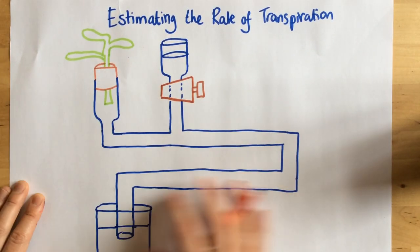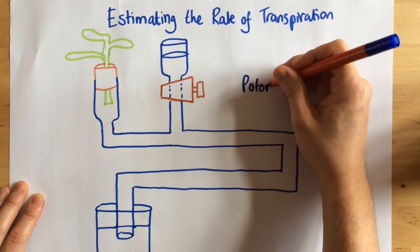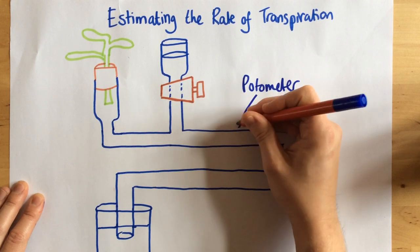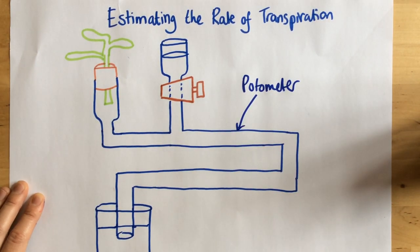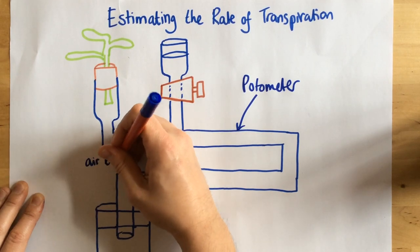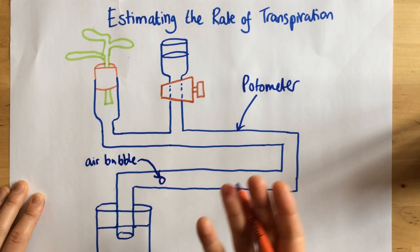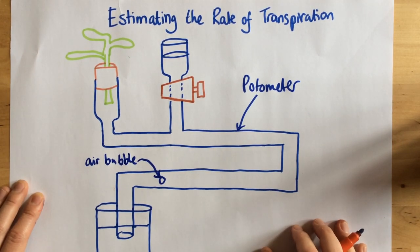So this whole bit of equipment here, the whole thing, is called a potometer. And essentially, all that it does is it tracks the movement of an air bubble, and then how far that bubble moves in a certain amount of time gives us the rate of transpiration.